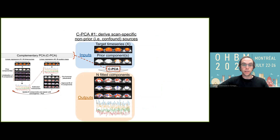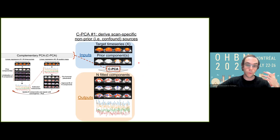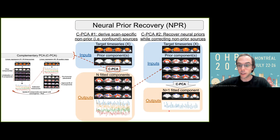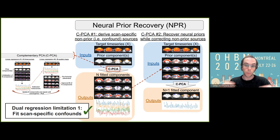CPCA is the building block for conducting the neural prior recovery algorithm. In a first CPCA step, we provide the set of prior components of interest representing neural networks. The first CPCA step will find all the set of potential confound components which differ from these priors, thus finding scan-specific confound components while preventing removal of neural activity. In a second CPCA step, we invert this process by providing the confound components as prior, such that all there is remaining to fit will be the neural networks originally of interest. Here we recover a scan-specific version of this network, thus accounting for the limitation where we are now defining scan-specific versions of the potential confound sources.